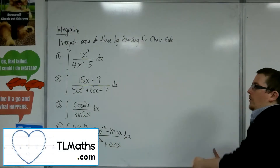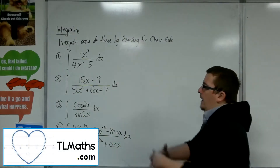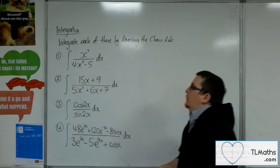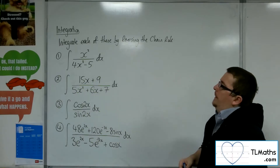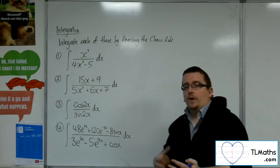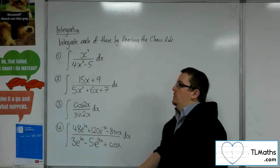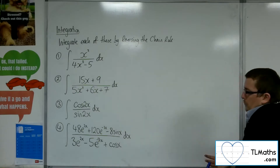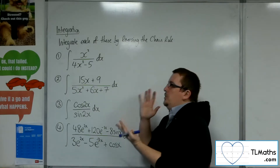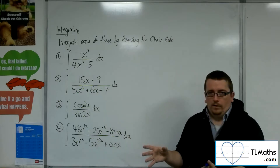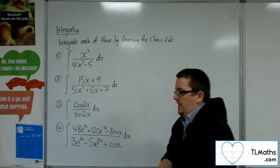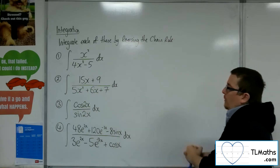In each of these cases we've got a fraction of expressions in the numerator and denominator, and we want to integrate each of these by reversing the chain rule. So what we're looking for is: is the numerator a multiple of the derivative of the denominator? That's what we're looking for.